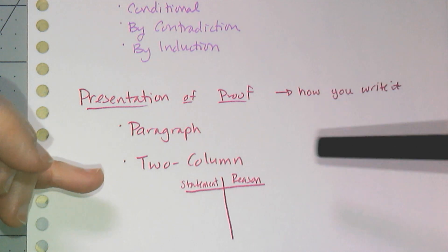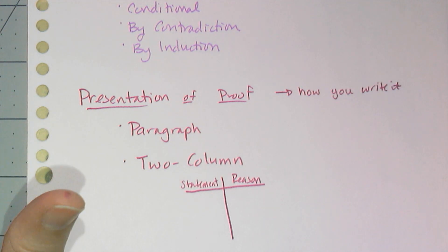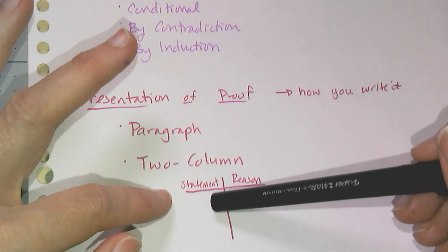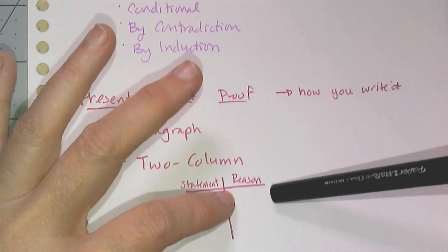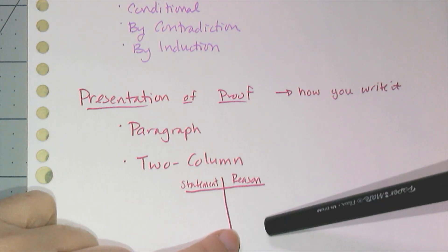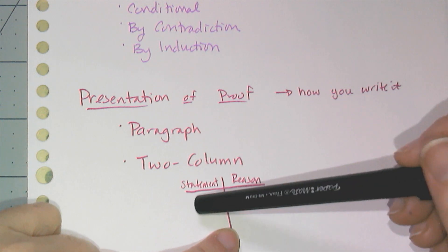We have also the two column proof, which is very straightforward. You make your statement on one column. In the second column you give the reasoning behind that statement, like why you can say that.